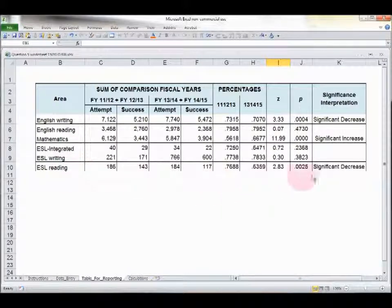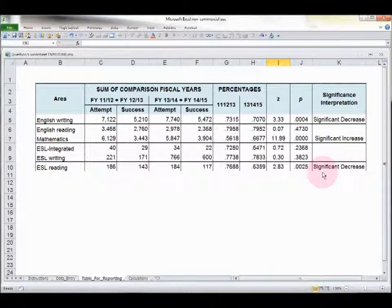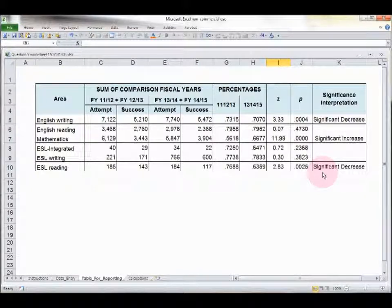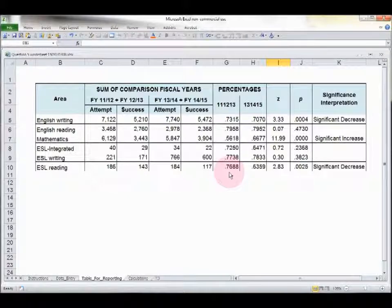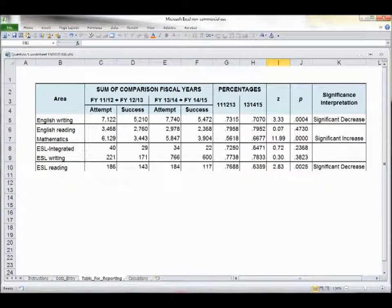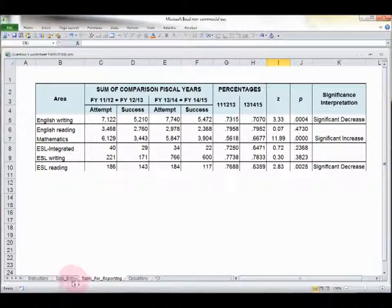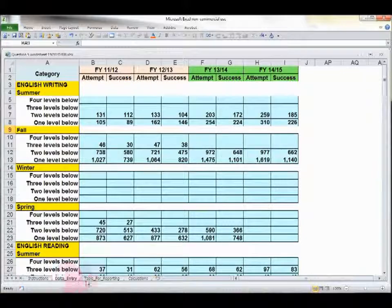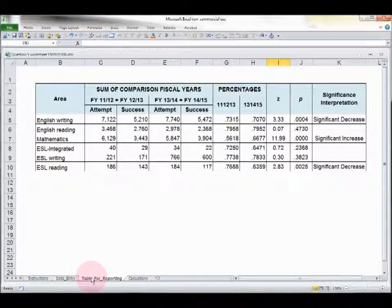ESL reading, same thing we see at the outcome of significant decrease. So again, you'd want to address that in item number five. Tell us what you're planning to do to turn around what's gone from a 76% rate of success to a 63% rate of success. Now, the nice thing about this table is it's ready for you to block and copy and paste into your report. All these calculations are done automatically. You don't need to do anything except put your numbers in over here on data entry. This table will populate automatically.